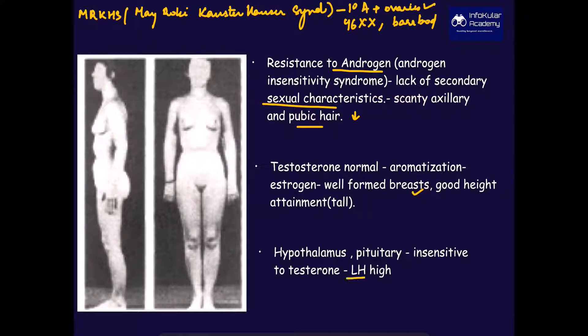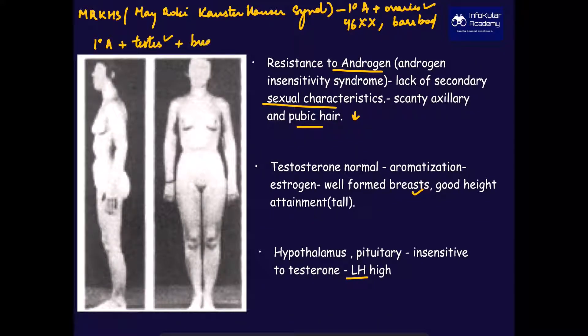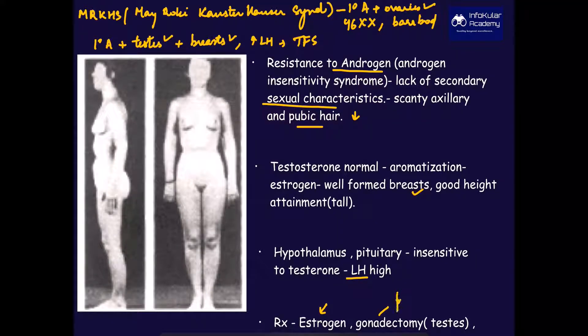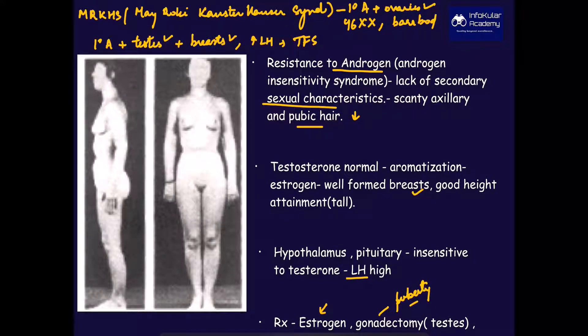The height attainment will be tall due to insensitivity to testosterone. The pituitary-hypothalamic axis will secrete high levels of LH. Whenever there is primary amenorrhea with presence of testis, well-formed breasts, and high LH indicated anywhere in the question, this will point to testicular feminizing syndrome. The treatment is estrogen therapy and gonadectomy, which has to take place during puberty, and vaginoplasty can take place as a therapy.